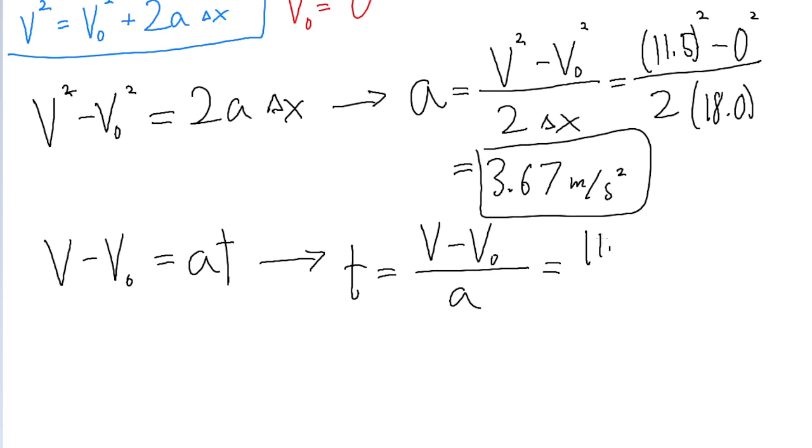So that's V, which is 11.5 meters per second, minus V0, which is zero, all divided by the acceleration, which is 3.674 meters per second squared. And if we put that into a calculator, then we find a time period of about 3.13 seconds.